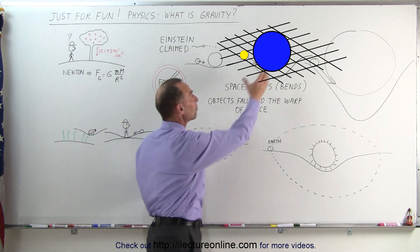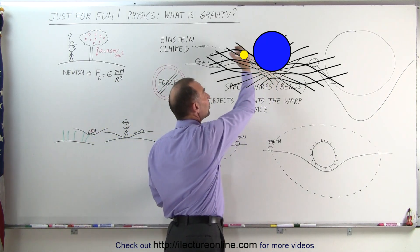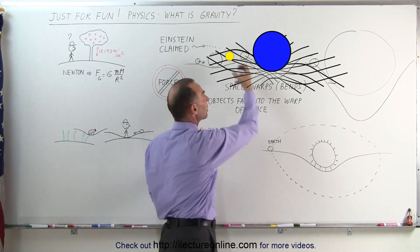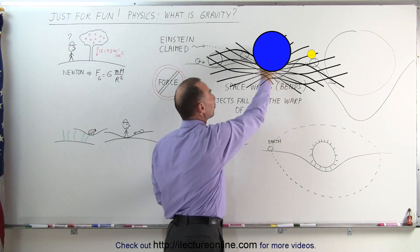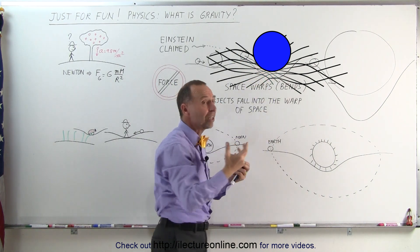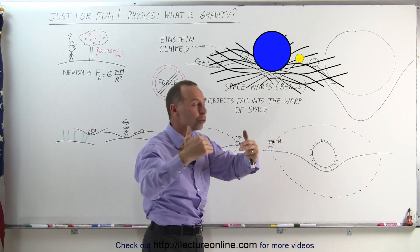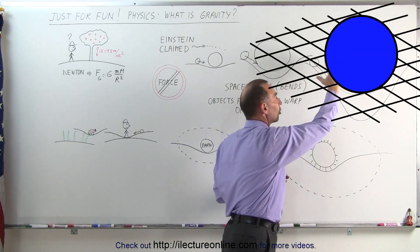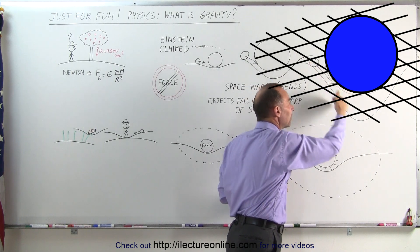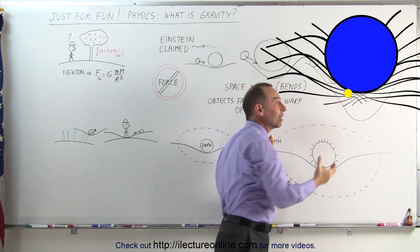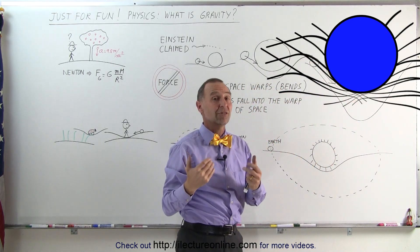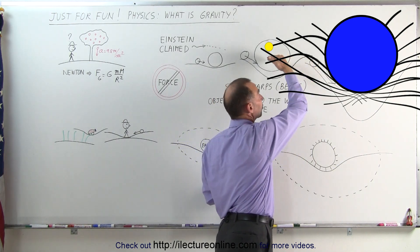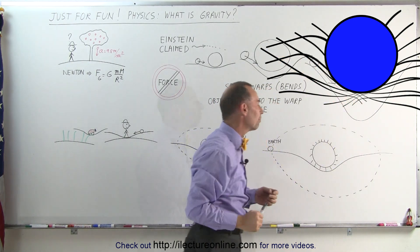The larger the object, the greater the bend, and the more readily objects would fall into it. It would appear as if they're being attracted to this big object, but in essence they're simply falling into the bend or the warp of space. The greater the mass of the object, the bigger the bend of space, and the greater the apparent force acting on objects — they would still simply be falling into that bend.